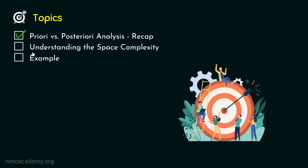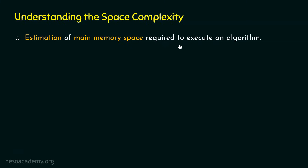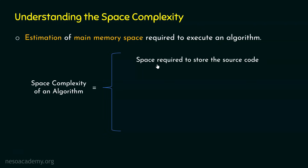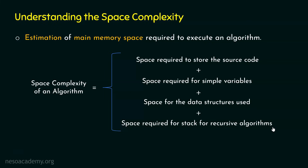Space complexity is the estimation of main memory space required to execute an algorithm. Space complexity of an algorithm is equal to: the space required to store the source code, plus the space required for simple variables, plus the space required for the data structures used, plus the space required for the stack for recursive algorithms.